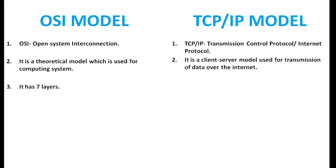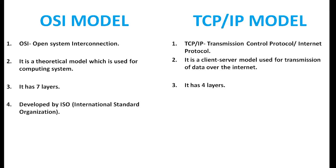OSI model has 7 layers, whereas TCP IP model has only 4 layers. OSI model was developed by International Standard Organization, whereas TCP IP model was developed by the Department of Defense.